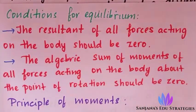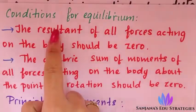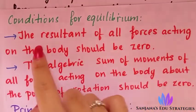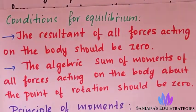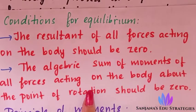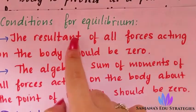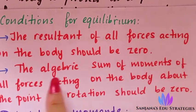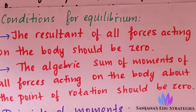Now we will see the conditions for equilibrium. The first condition: the resultant of all forces acting on the body should be zero. The second condition: the algebraic sum of moments of all forces acting on the body about the point of rotation should also be zero. Both of these must be zero.